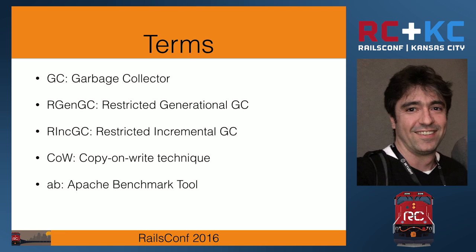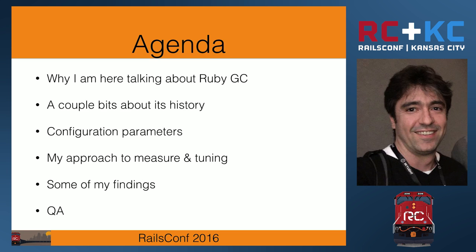Let's get started and talk about the Ruby garbage collector. Throughout the presentation, I'll go through some terms: GC is garbage collector; IGMDC is the restricted generational garbage collector; INCDC is the restricted incremental garbage collector; COW is copy-on-write technique; and AB is the Apache Benchmark load tool. My talk will follow these topics: why I'm here talking about the garbage collector, a little history of how the Ruby GC algorithm evolved through Ruby releases, some configuration parameters and how they evolved, and my approach to measuring and tuning.